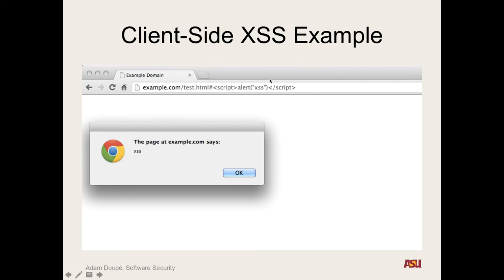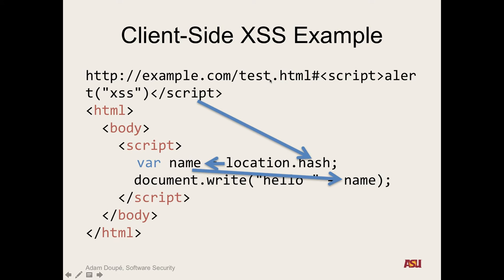Any place in JavaScript code that can turn a string into executable JavaScript can potentially be vulnerable. This includes document.write, eval, and the function keyword, among others. If you look up DOM XSS, there's a huge list of all types of DOM cross-site scripting sink functions.